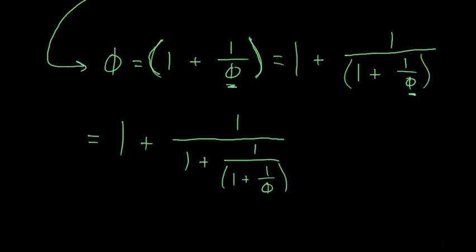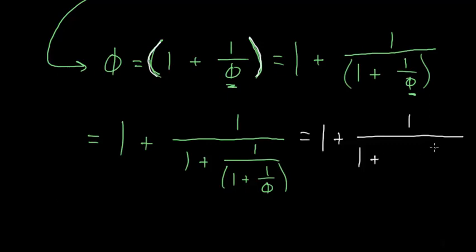From here, you can start to see a pattern. If we continue this out, just repeatedly making these substitutions for phi, we'll end up with all 1s: 1 plus 1 divided by 1 plus 1 divided by 1 plus 1 divided by 1 plus 1 divided by 1 plus — and this goes on forever.